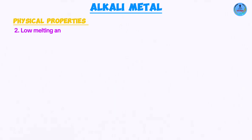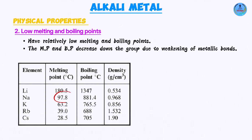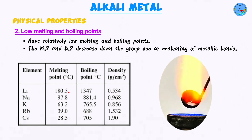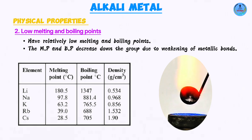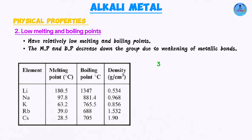Moving on to another property: they have low melting and boiling points. Sodium, for example, has a melting point of 98 degrees Celsius — meaning if you heat a solid piece of sodium to 98°C it will start melting. That is quite low compared to other metals, and the reason is tied to their weaker metallic bonds compared to other metals.